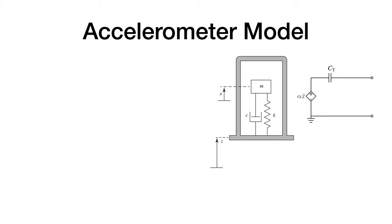Here is a cartoon representation of the accelerometer. On the left we have the mechanical side of the system and on the right we have the electrical side of the system.